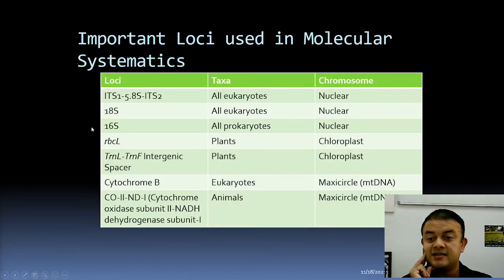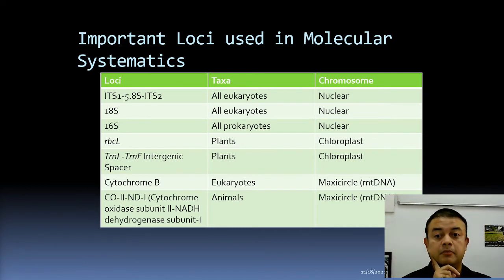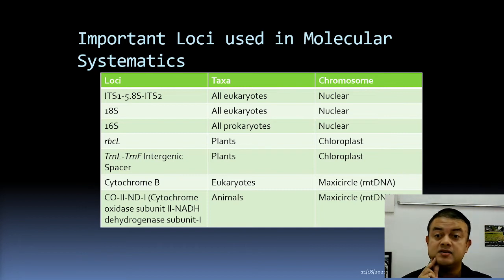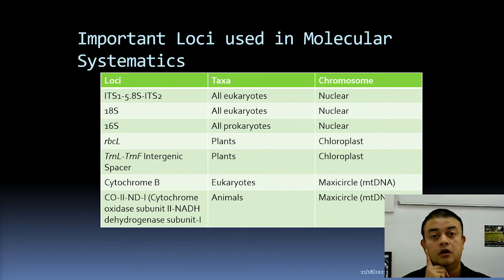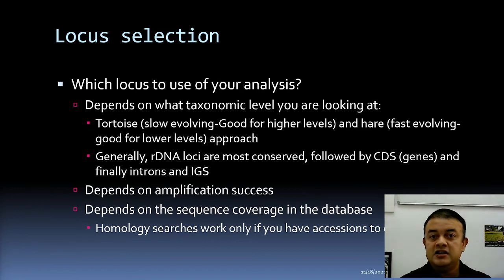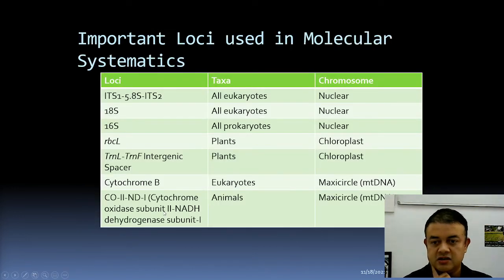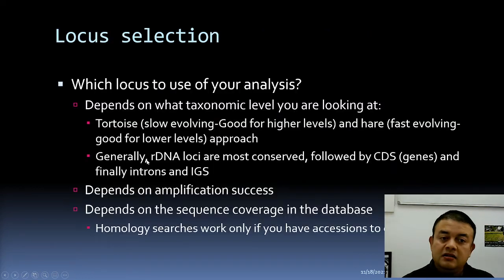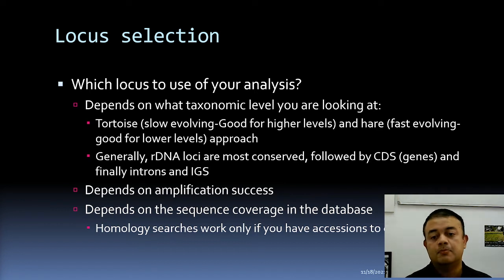Generally, ribosomal DNA loci are the most conserved, followed by genes (coding DNA sequences), and finally introns and intergenic spacers. Ribosomal loci like 18S, 16S, and 5.8S are highly conserved and good for higher taxonomic levels such as order or domain. Coding DNA sequences come next, followed by introns and intergenic spacers like the trnL–F IGS, which are fast evolving and good for species-level and even family-level phylogenetics.